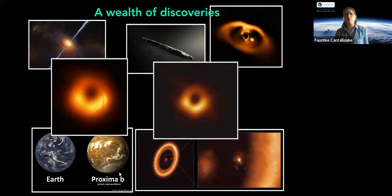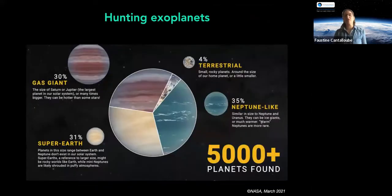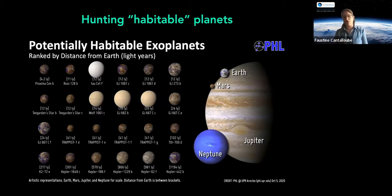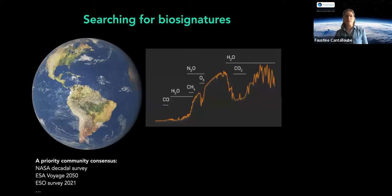I want to focus on hunting exoplanets — not only because that's what I work on, but because it's relevant to the topic. We've found more than 5,000 exoplanets today, ranging widely; about four percent are terrestrial planets. Among those we found a bunch of potentially habitable planets — a very debated concept of where you could find liquid water on the surface. Mars and Venus are actually very close to the habitable zone but are not habitable.